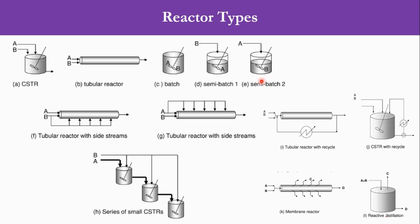As a recap, let us re-look at the reactor types which we discussed in our previous lecture, lecture number 46. We studied different types: first was the CSTR, then tubular reactor, batch reactor. Then we studied two types of semi-batch reactor in which one reactant is in excess while the other is fed continuously. Then the tubular reactor with side streams, where one reactant is added as a side stream — in one case B is added, in another case A is added. Then series of small CSTRs, tubular reactor with recycle, and CSTR with recycle. The CSTR with recycle is used for liquid systems while the tubular reactor with recycle is used for gas systems.